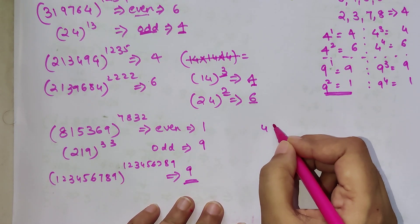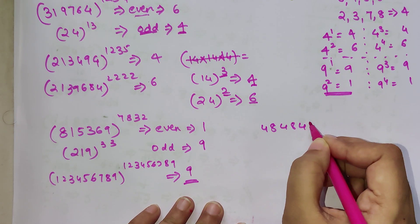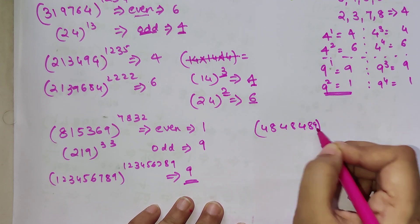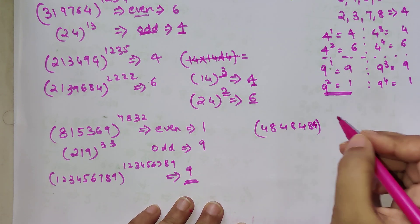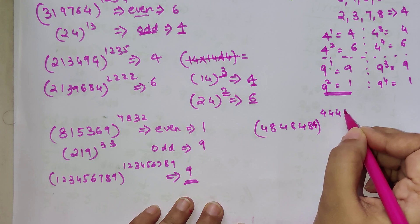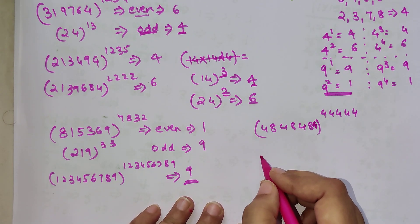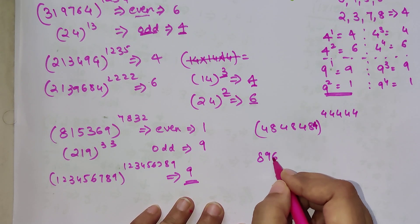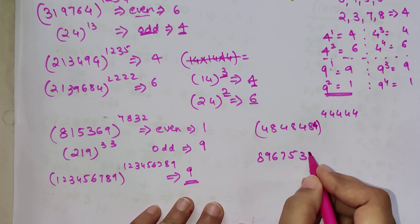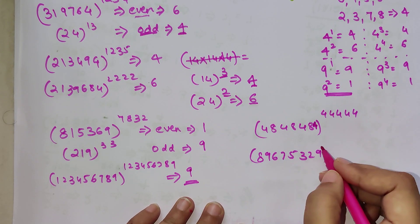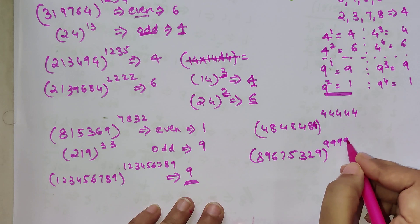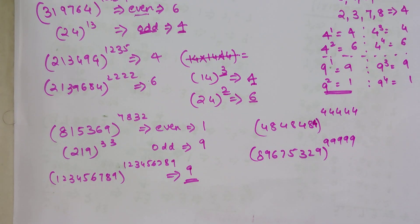Now for your practice questions: tell me the last digit of 48484848 raised to 444444, and the last digit of 89675329 raised to 99999. Let me know your answers in the comments section. That's it for now — I will see you in the next video. Thank you!